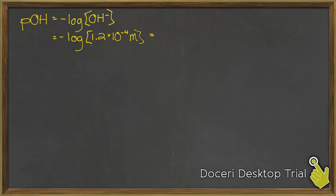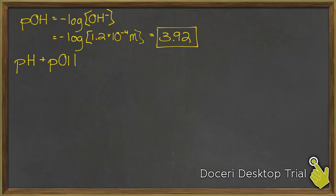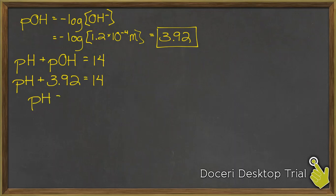There is my pOH. Next I'll find the pH using pH plus pOH equals 14 — so pH equals 14 minus pOH. I know the pOH, so 14 minus that number gives me a pH of 10.08, keeping two decimal places.